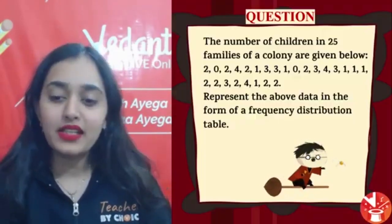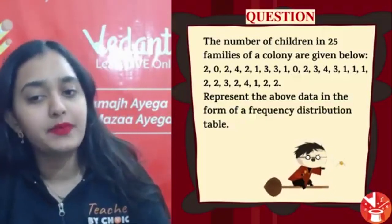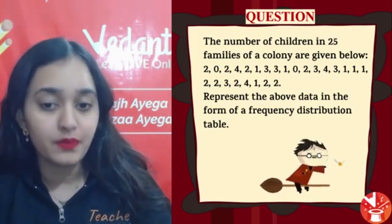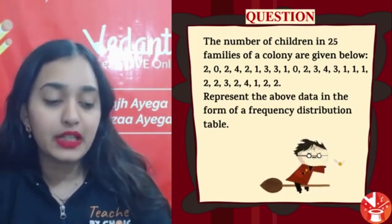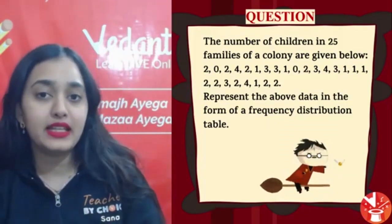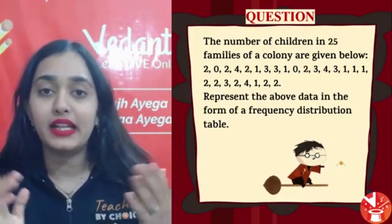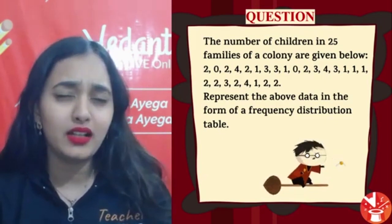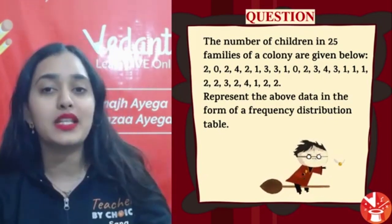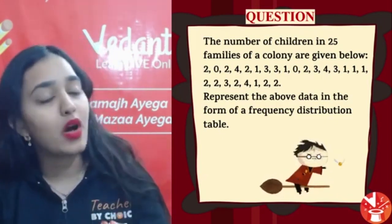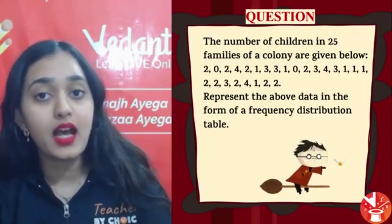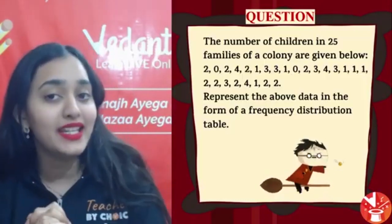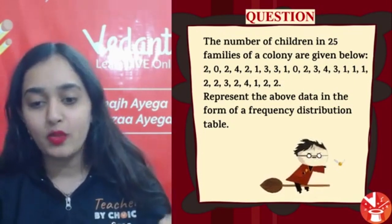Here comes the first question: Number of children in 25 families of a colony are given below — represent the data in the form of a frequency distribution table. Data Handling is a very easy chapter — tally table banana, drawing pictograph and drawing conclusions, bar graph banana — we have learned all three things.